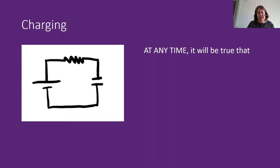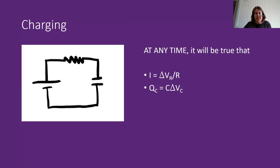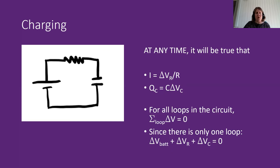Here is the most basic charging situation: a battery, a resistor, and a capacitor. At any time while the capacitor is charging, it will be true that current equals the potential difference of the resistor divided by its resistance, and the charge on a capacitor plate equals its capacitance times the potential difference between its plates. These two things are always true, no matter what the current or charge is. The sum of potential differences around the loop — battery, resistor, and capacitor — must equal zero.